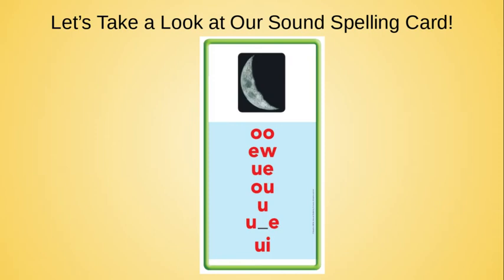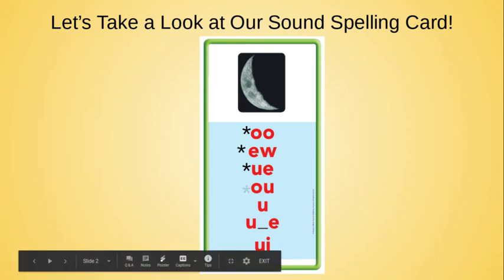Even though there are seven different ways to spell the ooo sound, we're going to focus on four: o-o, u-e, e-w, and o-u.